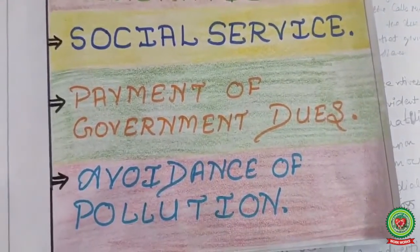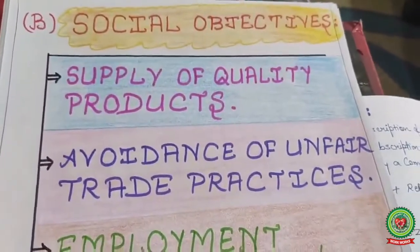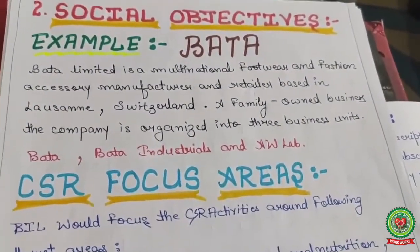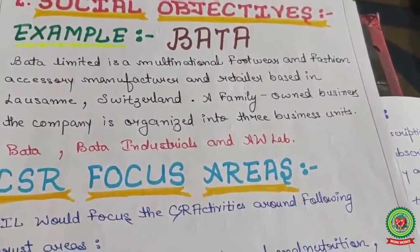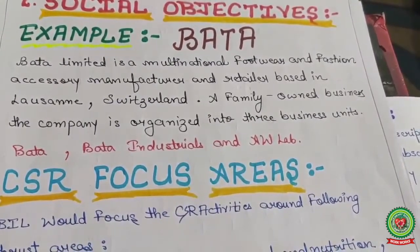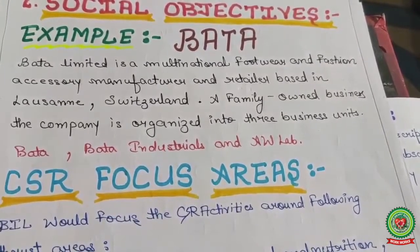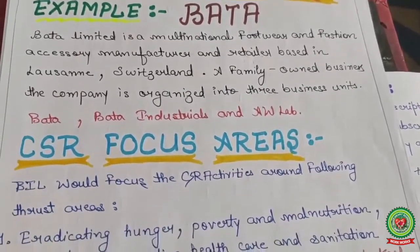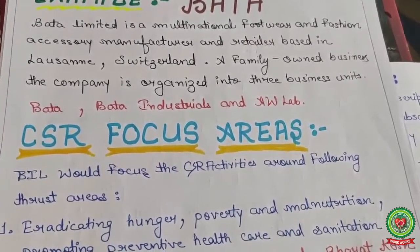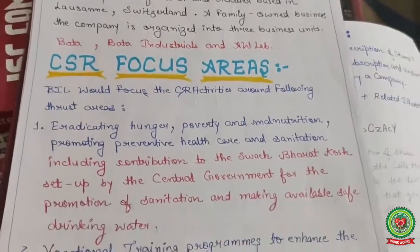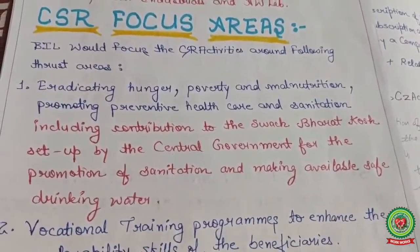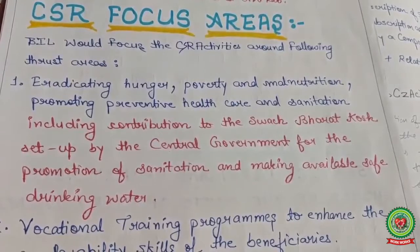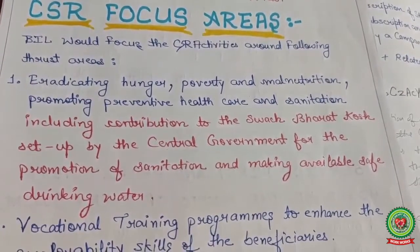Before discussing all the points, let's look at one company as an example: Bata Limited — a multinational footwear and fashion accessory manufacturer and retailer based in Lausanne, Switzerland. It is a family-owned business organized into three units: Bata, Bata Industrials, and AW Lab. CSR — corporate social responsibility — focus areas for Bata include eradicating hunger, poverty, and malnutrition, and promoting preventive healthcare and sanitation.